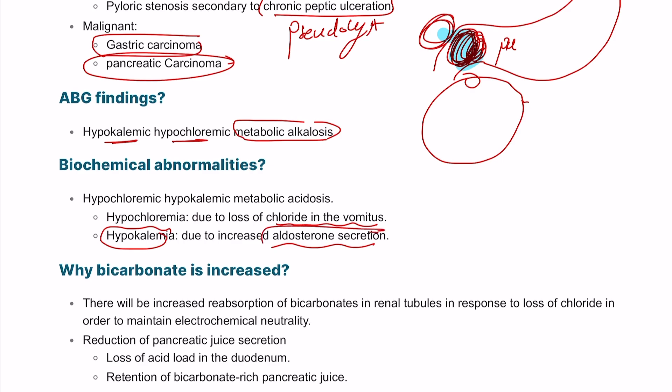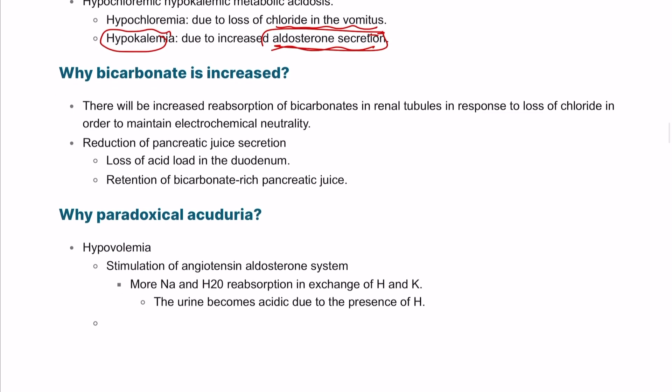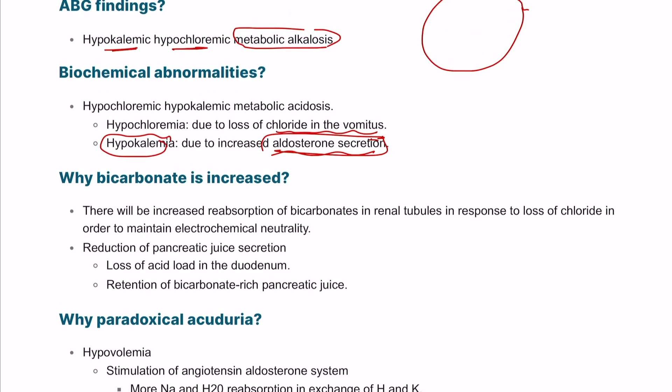We explained the release of aldosterone by activation of renin-angiotensin-aldosterone system. Aldosterone can lead to salt and water retention, but when you're retaining something, you have to excrete something in return, which will be alternating between hydrogen and potassium. The patient can have aciduria and hypokalemia unless they're taking potassium-sparing diuretics.